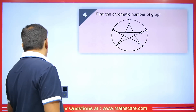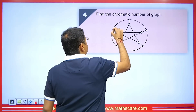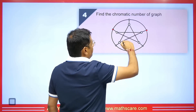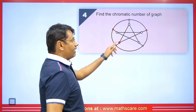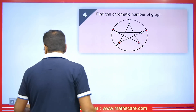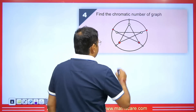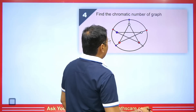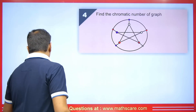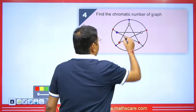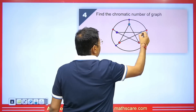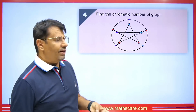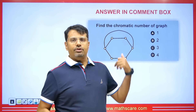For the final question, find the chromatic number of the given graph. I color certain vertices red — non-adjacent ones can share this color. Then I use purple for another set of non-adjacent vertices. Finally, I choose blue for the remaining vertices. Using red, purple, and blue — three colors in total — this becomes a three chromatic graph with chromatic number three.